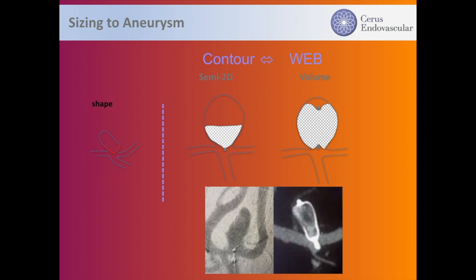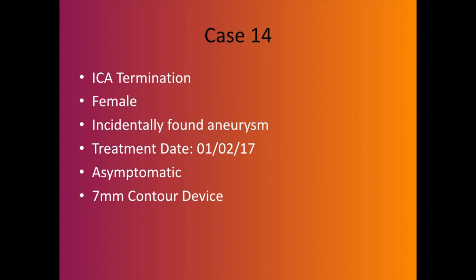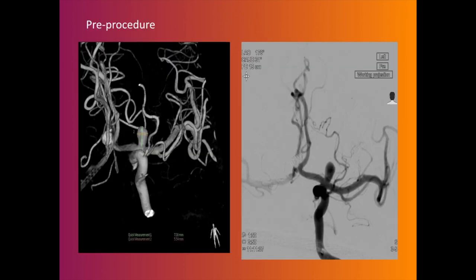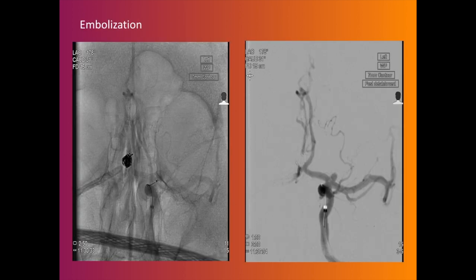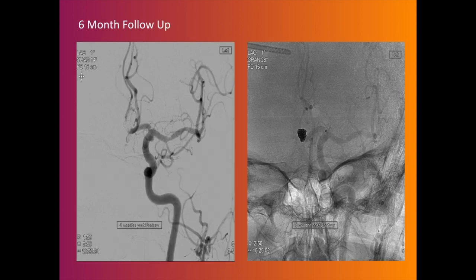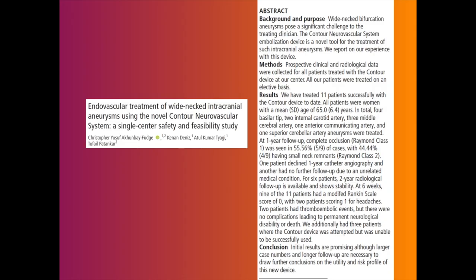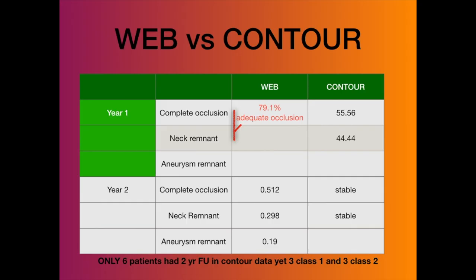Here is a basilar termination aneurysm in a lady previously coiled. The Contour device is placed at the neck of the aneurysm — immediate stasis is seen and the aneurysm appears occluded. At six months there is complete occlusion, at 12 months again complete, and at two years the aneurysm remains completely occluded. Our recently published data shows occlusion rates are much higher with Contour compared to WEB.